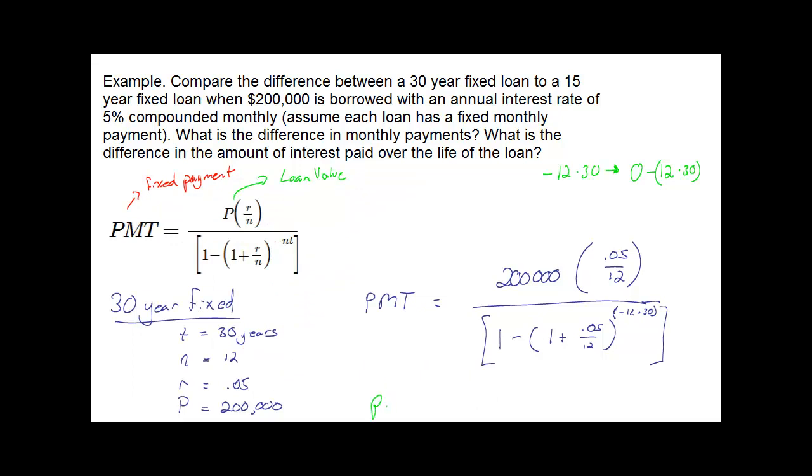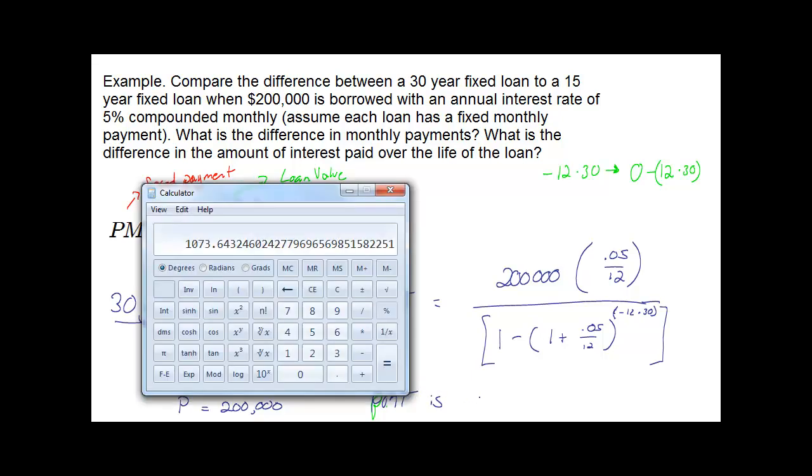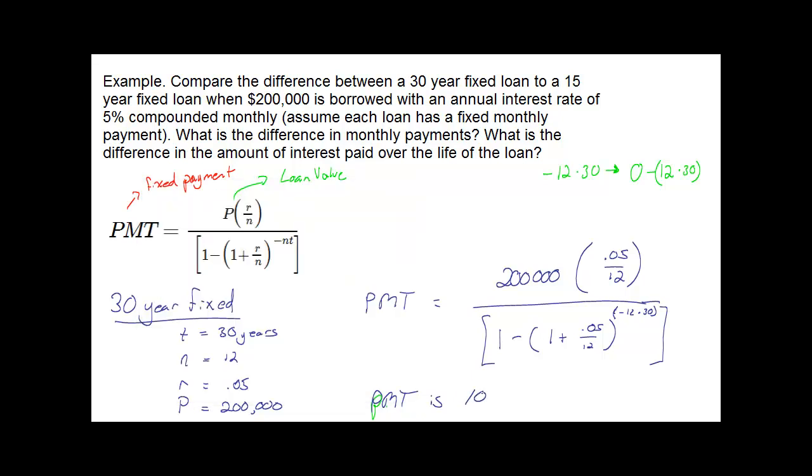Of course, this doesn't include things that are realistic for a loan like taxes and insurance, typically put in escrow. This is just literally the value for paying the actual loan amount, not the other payments that come with owning a house.